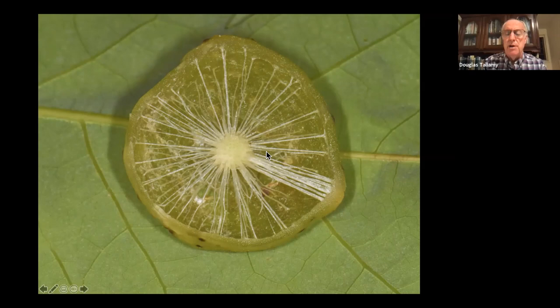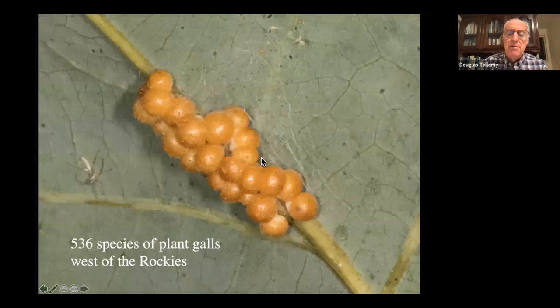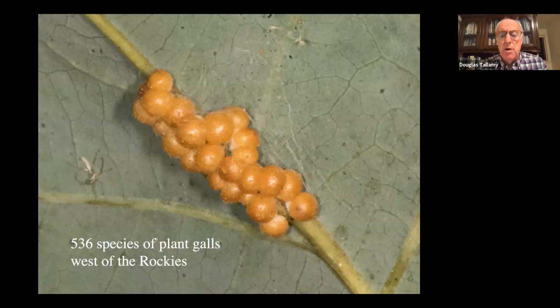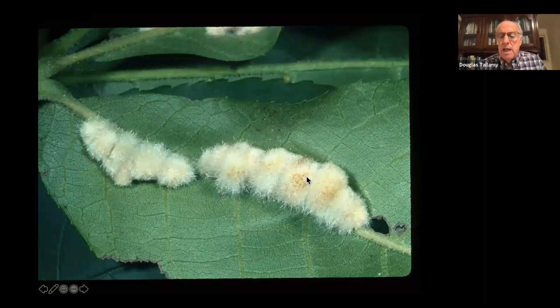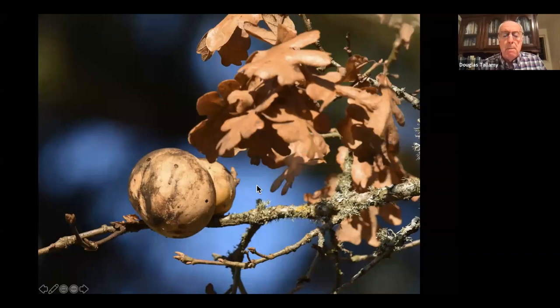Gall variety is fantastic — many look like plant diseases, some look like pottery, some look like brains. Each one has a different galler inside. There are 536 species of plant galls west of the Rockies, most of them cynipid gallers on oak trees. Some grow on leaves, others on stems, with all kinds of crazy shapes. This is one of the large galls on Quercus garryana, the Oregon white oak, very common out West.